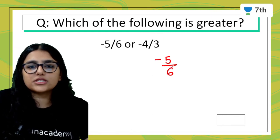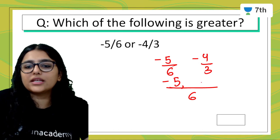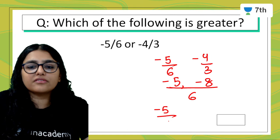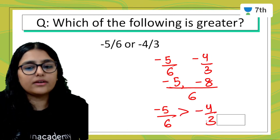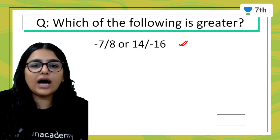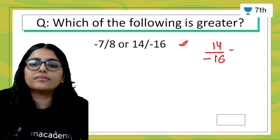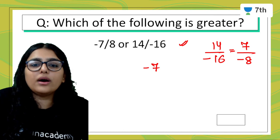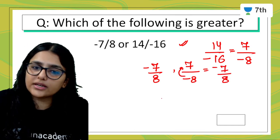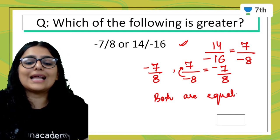Which of the following is greater: minus 5 by 6 or minus 4 by 3? Take the LCM, which is 6. Minus 5 by 6 stays as minus 5 by 6. For minus 4 by 3: 2 times 3 is 6, and 2 times minus 4 is minus 8, giving minus 8 by 6. Since minus 5 is greater than minus 8, minus 5 by 6 is greater than minus 4 by 3. For the last pair: 14 upon minus 16 in lowest form — 2 times 7 is 14 and 2 times 8 is 16 — gives minus 7 by 8. And 7 upon minus 8 can also be written as minus 7 upon 8. Both are equal, so they are equivalent rational numbers.